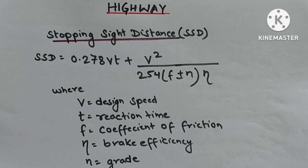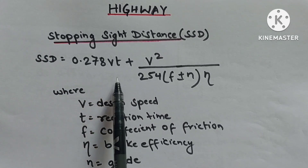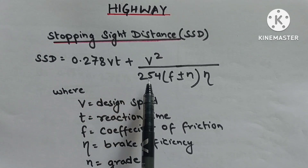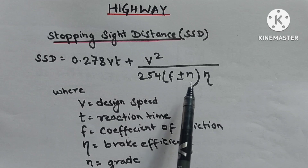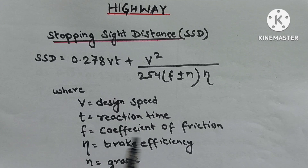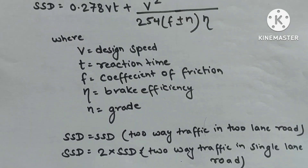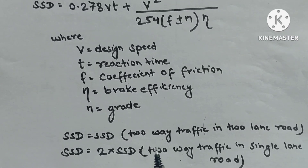First, we start from highway engineering. Stopping sight distance is equal to 0.278 VT plus V² upon 254(f ± n/η), where V is design speed, T is reaction time, f is coefficient of friction, η is brake efficiency, and n is grade.